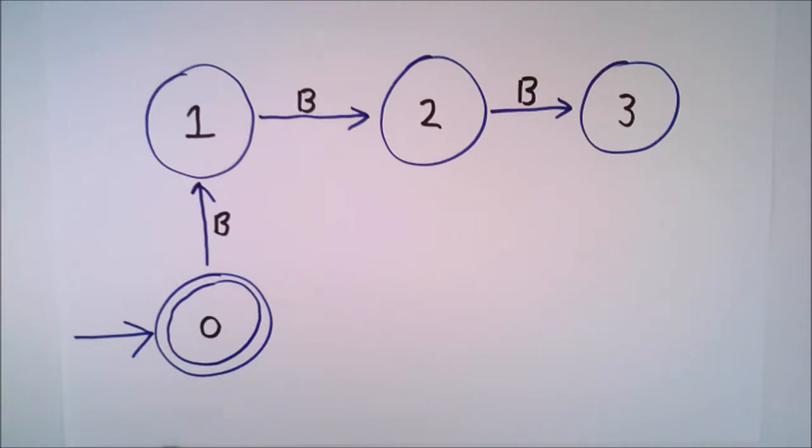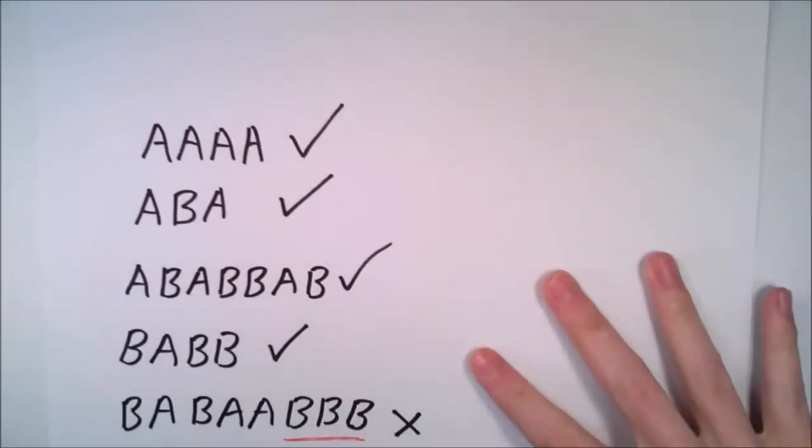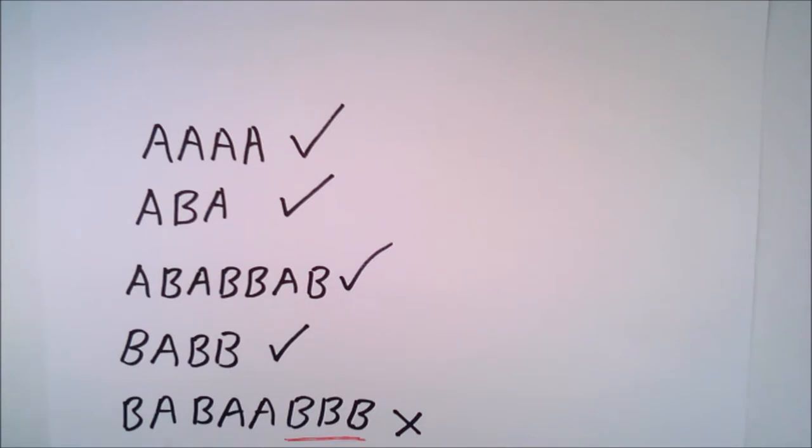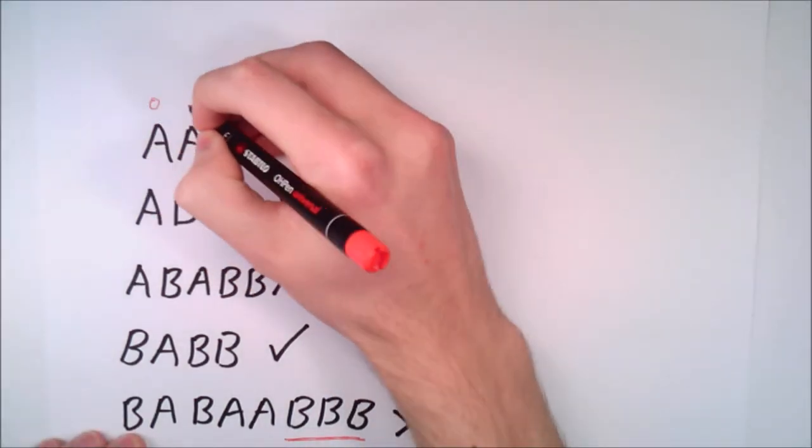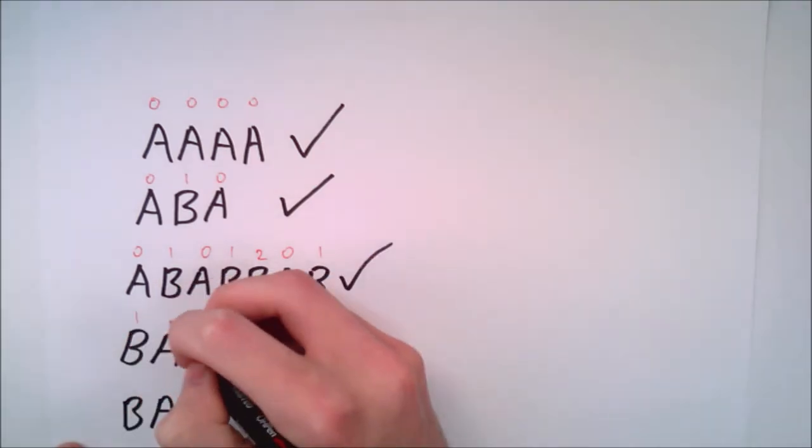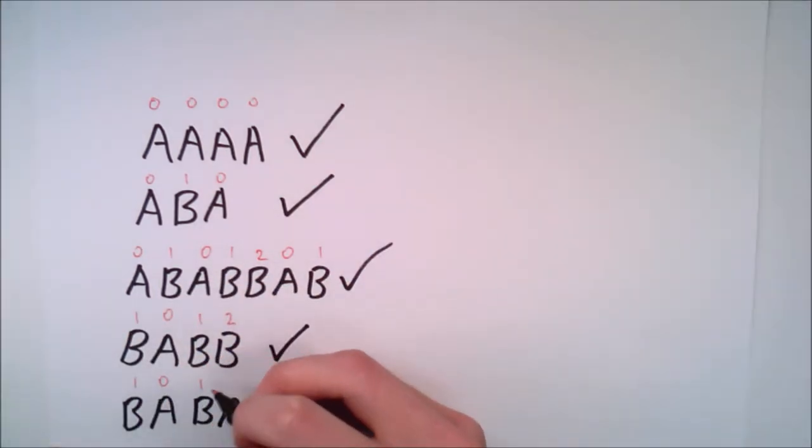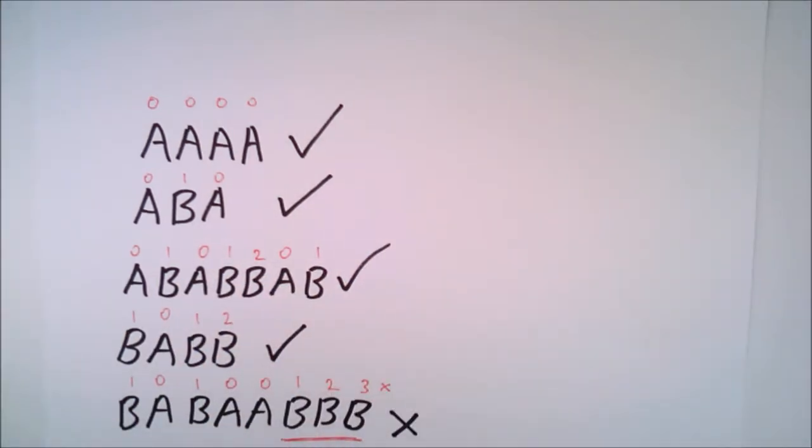What can we interpret from these new states? We know from our definition that if there are zero, one or two Bs in a row, that string so far is still acceptable. Therefore, we can call states one and two accepting states also.